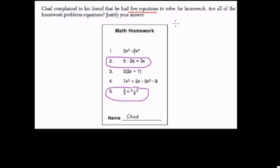3x squared times 2x to the fourth, well, that would be 6x to the sixth. But that's not related to anything. We can't solve for x. There's no equal sign. They're just expressions.